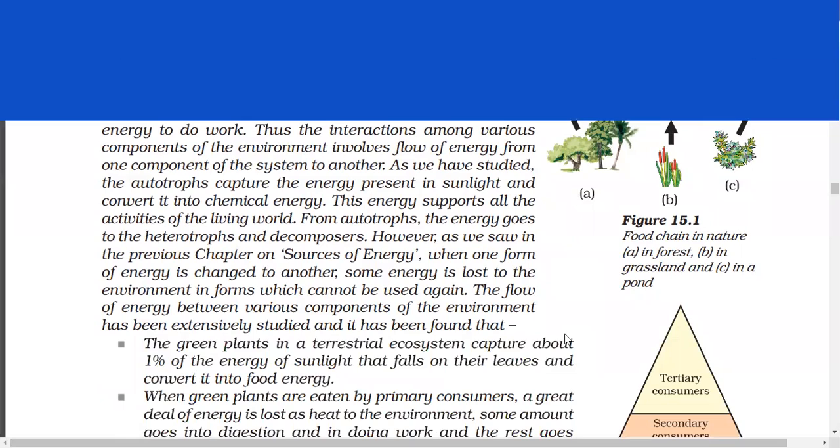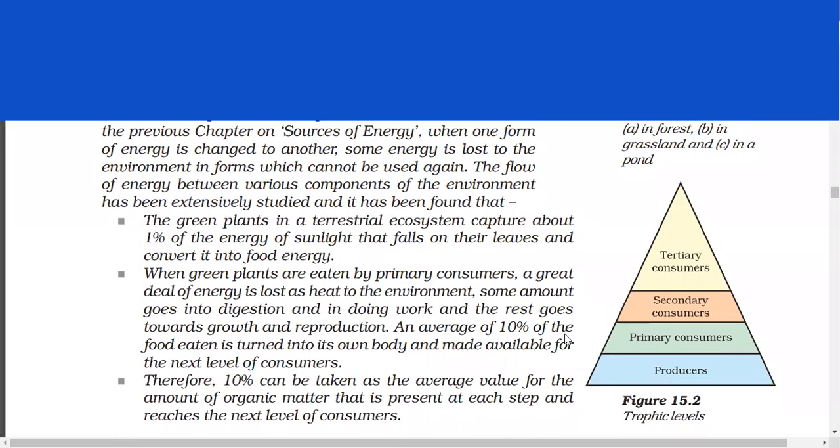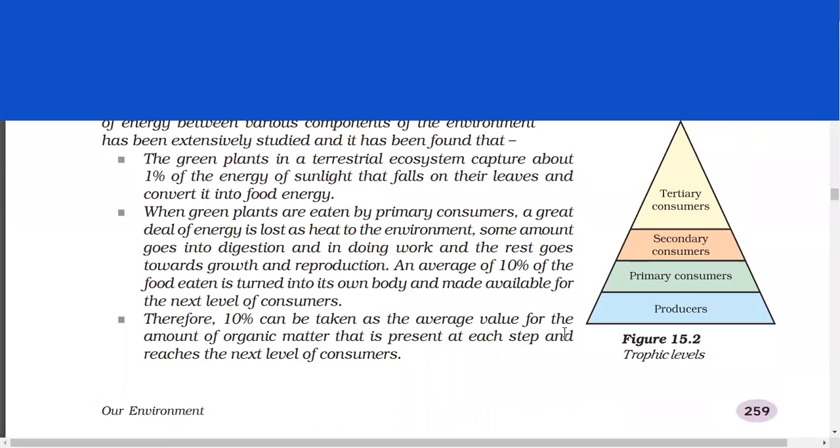However, as we saw in the previous chapter on sources of energy, when one form of energy is changed to another, some energy is lost to the environment in forms which cannot be used again. The flow of energy between various components of the environment has been extensively studied and it has been found that green plants in a terrestrial ecosystem capture about 1% of the energy of sunlight that falls on their leaves and convert it into food energy. When green plants are eaten by primary consumers, a great deal of energy is lost as heat to the environment. Some amount goes into digestion and in doing work and the rest goes towards growth and reproduction. An average of 10% of the food eaten is turned into its own body and made available for the next level of consumers. Therefore, 10% can be taken as the average value for the amount of organic matter that is present at each step and reaches the next level of consumers.